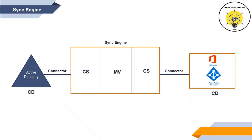The second component of Sync Engine is connectors. Each connected data source has a dedicated connector. Connectors are the medium through which data flows from connected data sources to connector space, or from connector space to another connected data source. At one time, data can flow in one direction only — either from Active Directory to Azure Active Directory, or from Azure Active Directory to on-premise Active Directory.